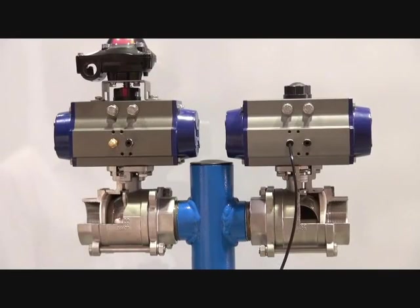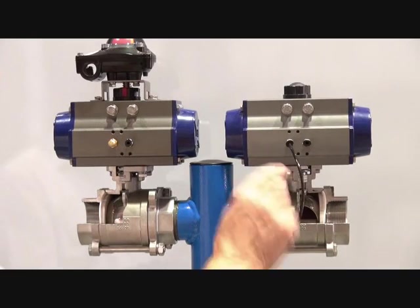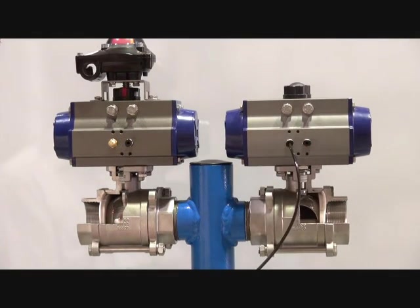With the double acting actuator, I pipe this up so we can put signal into both sides. Operate in this direction. The actuator swings around, and we remove the air supply, and the actuator will stay where it is.